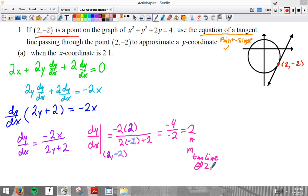At 2 comma negative 2. Okay. So, now we have a point. We have a slope. So, I'll say that my tangent line.